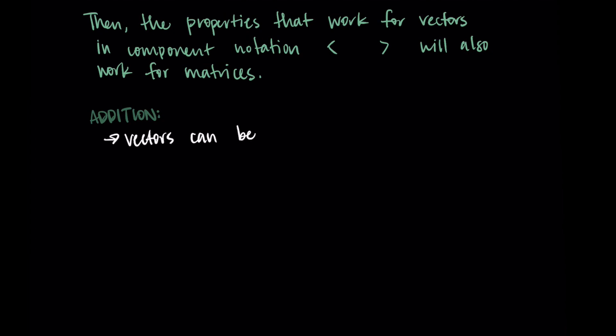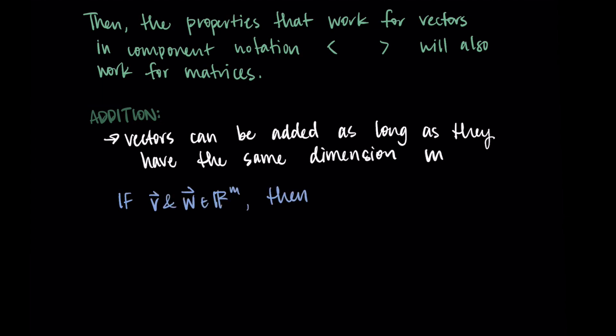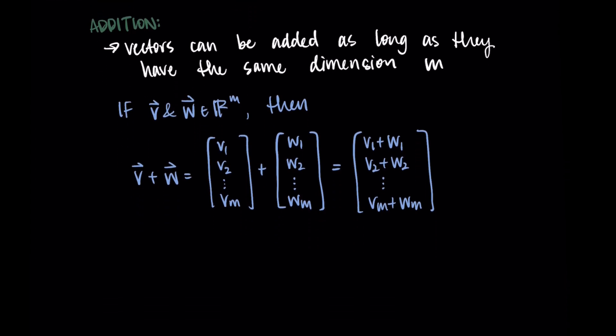So for example, we can do addition with vectors. So vectors can be added as long as they have the same dimension m. So if we have two vectors in R^m, then we can add those vectors V plus W by writing out the one vector plus the other in matrix form. So I have V1 through Vm plus W1 through Wm. And we add these two matrices, these two column vectors, by just adding the elements. So the first row is now V1 plus W1, the second row is V2 plus W2, all the way through Vm plus Wm.